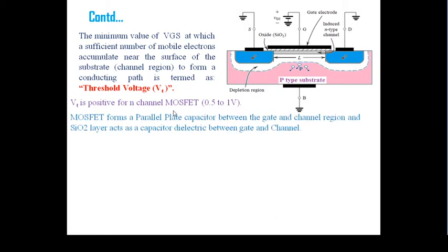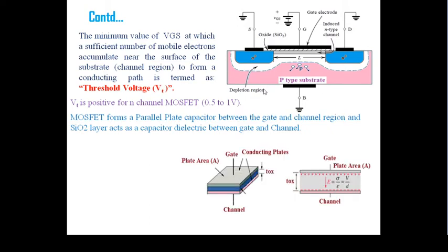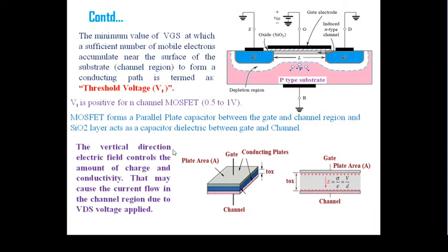One more thing: a MOSFET forms a parallel plate capacitor — first plate is the gate metal, second plate is the channel, and in between there is the oxide, forming a parallel plate capacitor. The gate region, channel region, total plate area, oxide thickness TOX, and electric field (sigma over epsilon, or V = dV/dL) — the vertical electric field direction controls the conductivity.